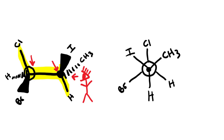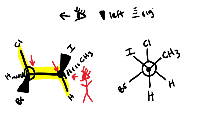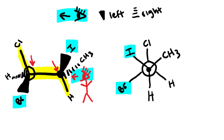Again, if you're struggling to visualize this, use the shortcut: cyclops man is looking left in this case, so wedges go to the left and dashes go to the right. Everything on a wedge should be on the left side of the molecule — and it is. Everything on a dash should be on the right side of the molecule — and that's exactly what we're seeing.